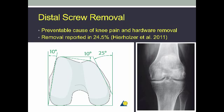There is one preventable cause of knee pain, and that involves the distal locking screw placement. Before discussing the screw, I want to describe the normal osteology of the femoral condyle. You can see that the shape of the femoral condyle is that of a trapezoid, not a rectangle. The condyle tapers from the posterior to anterior direction, and a surgeon must be aware of this, especially when looking at an AP radiograph, where it's difficult to appreciate the anterior tapering.